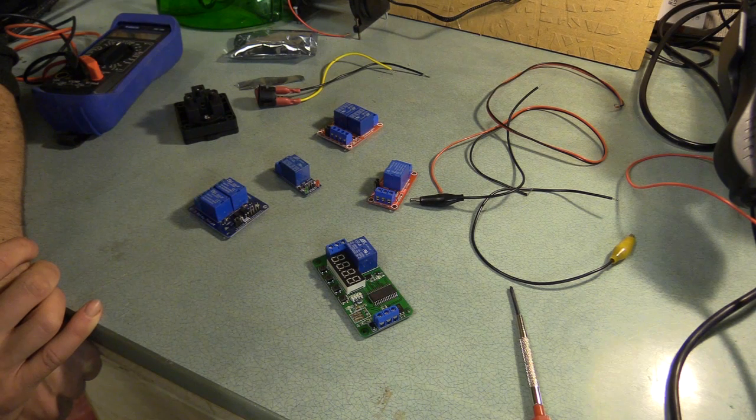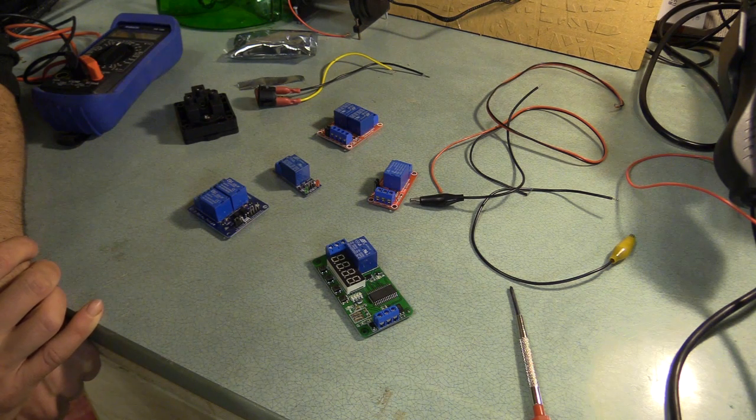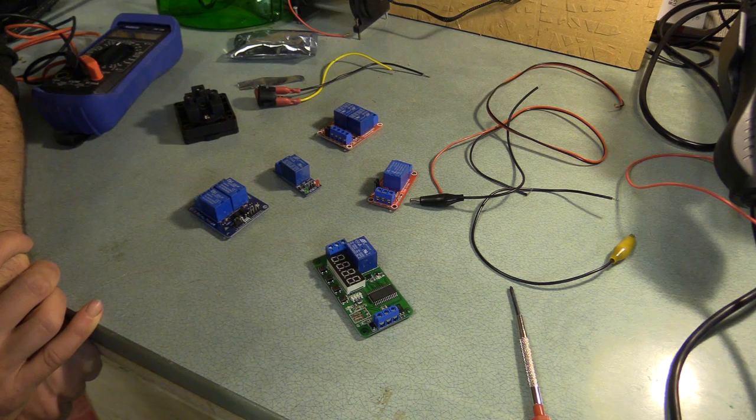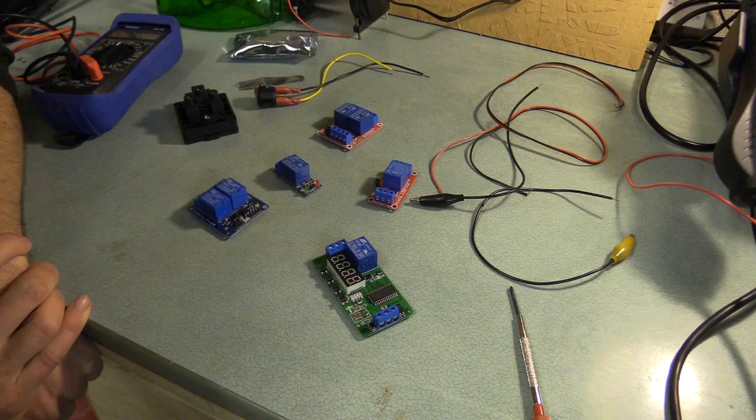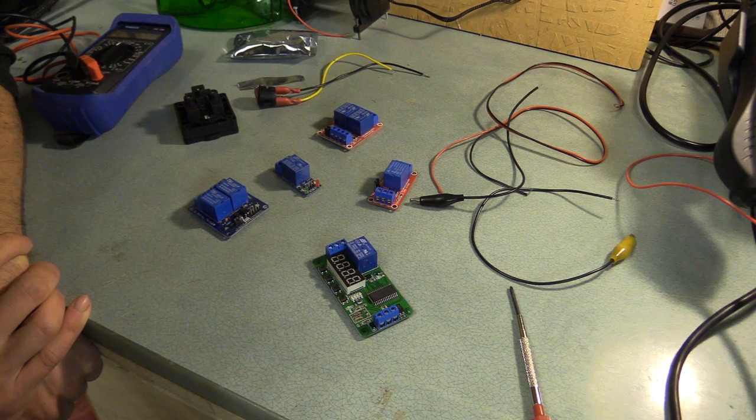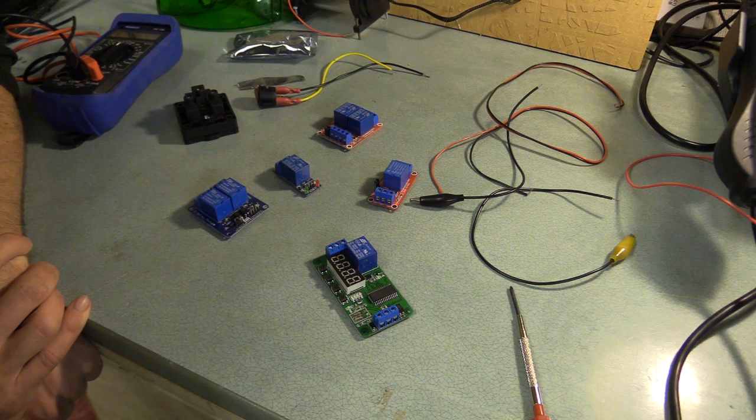In the end I decided to simplify the CNC machine and controller at this stage, replacing the water-cooled spindle with all its additional cables and tubing and headaches with an air-cooled one, and to connect a dual channel relay with two 240V power sockets on the enclosure.